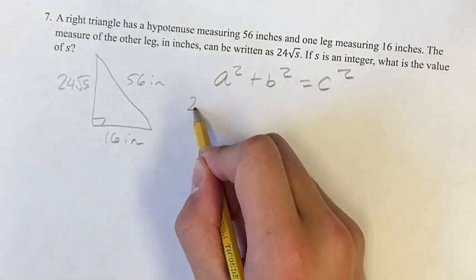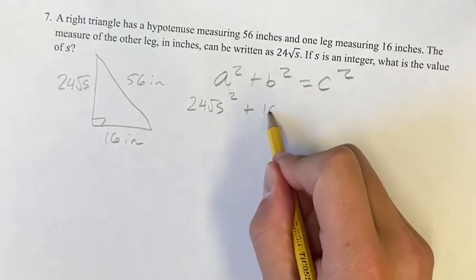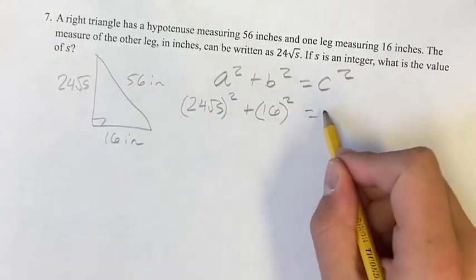Plugging in, we have 24 root s squared plus 16 squared is equal to 56 squared.